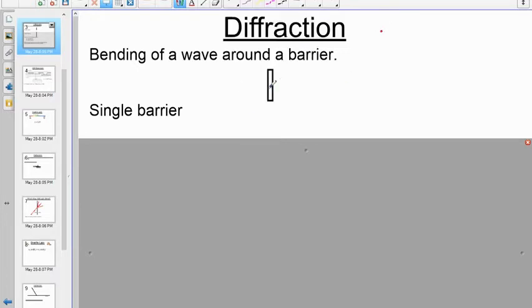The first would be single barrier diffraction. If you had, this is like a top view, like a little sandbar here, and you had a wave coming by, this part of the wave would reflect off. The wave, as it passes, would bend around the barrier, so you would get diffraction like this.